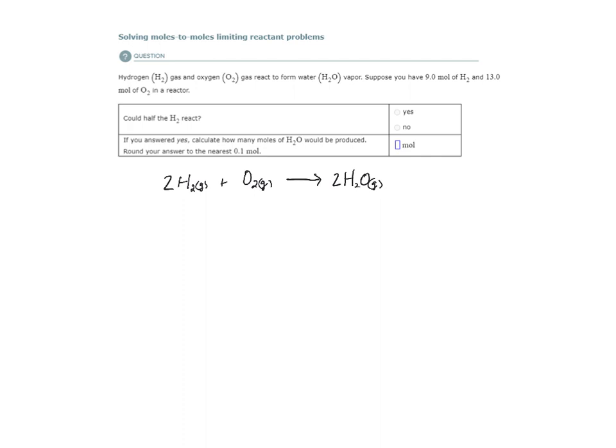And it says suppose we have nine moles of H2 and 13 moles of O2. The first question I ask is could half of the H2 react? We have nine moles of H2 to start. So how do we answer whether or not half of the hydrogen gas could react in this reaction giving these amounts of substances?